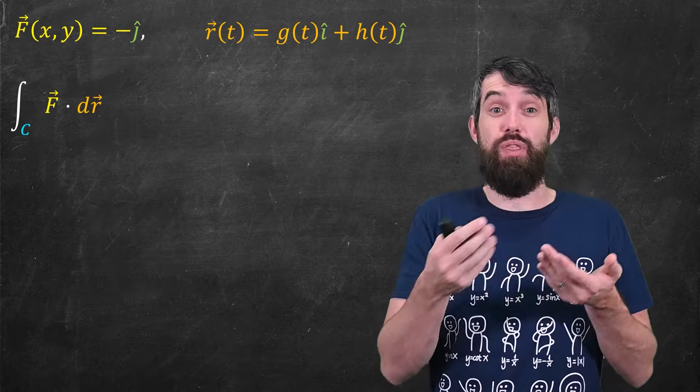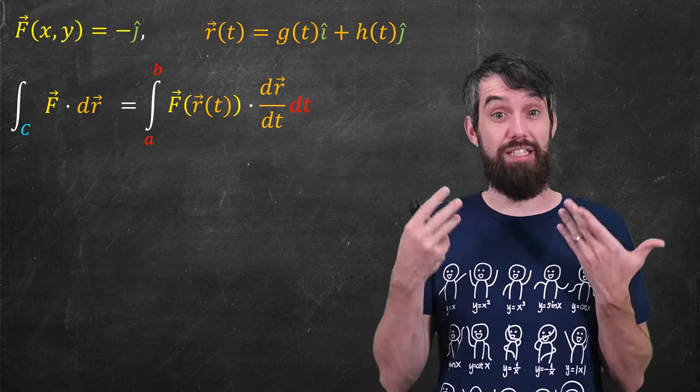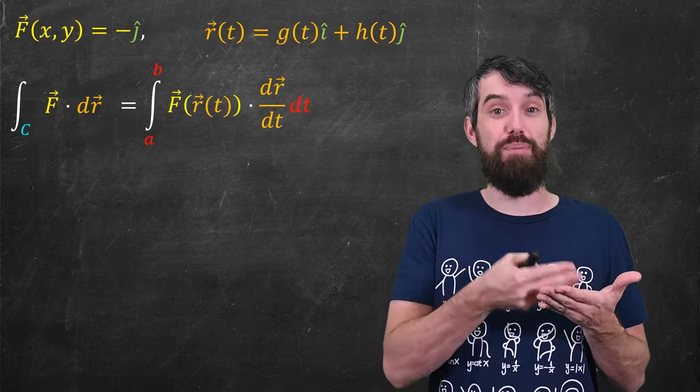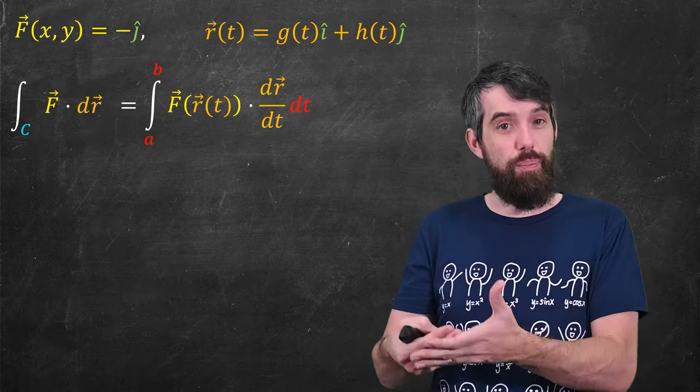Either way, when you want to compute it with a specific parameterization r of t, the version of the formula you have to use is the one that is in terms of t, the integral from a up to b, which are t values of f dotted with r prime dt.